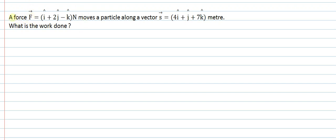Hello students, so we'll understand this question now. A force F is equal to i cap plus 2j cap minus k cap Newton moves a particle along the vector s equal to 4i cap plus j cap plus 7k cap meter. What is the work done in this case?